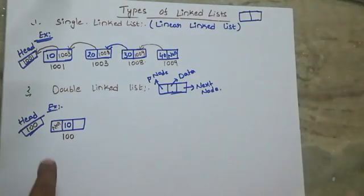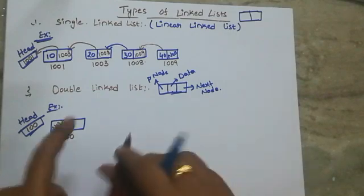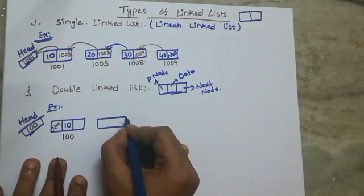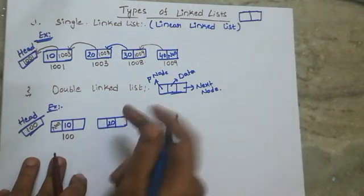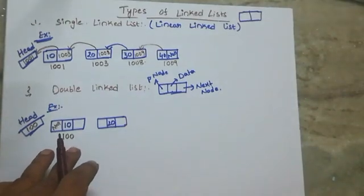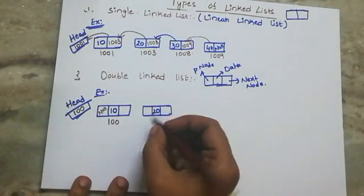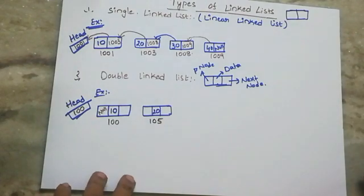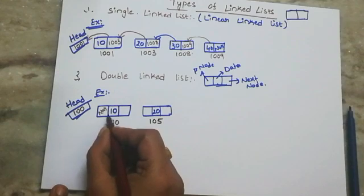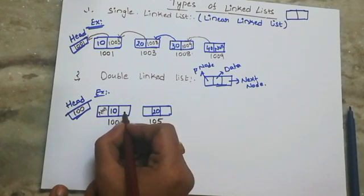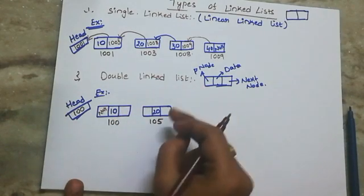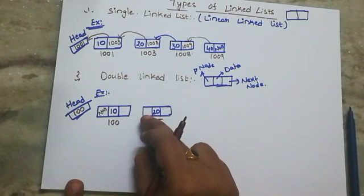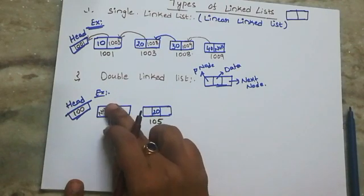We will place the head pointer. We store the head pointer — this is the first node. This is the previous node, we will place null. Every double linked list's first node's previous part is null. I created another node with 3 parts; the data is 20. By default we will place null. Address is 105. We will store address 100 in the previous part of node 20.